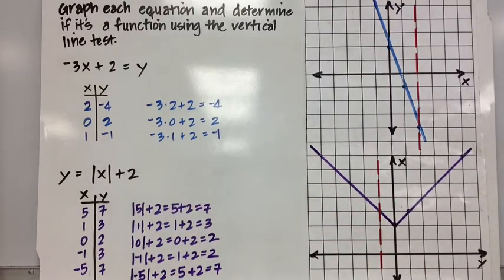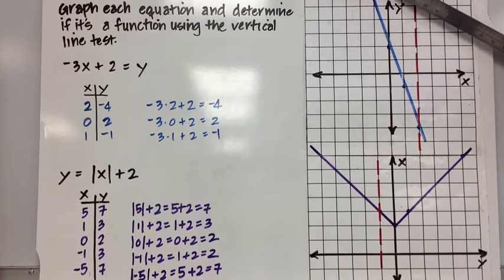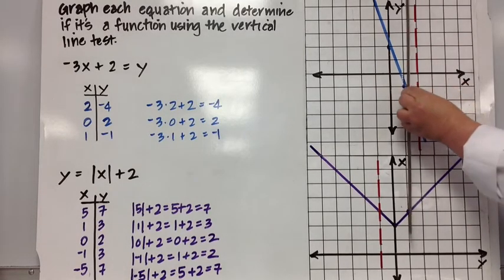So I graph those points: 2 comma negative 4, 1 comma negative 1, and 0 comma 2. Those points are all connected by a straight line. That represents the equation y equals negative 3x plus 2. You can see I drew one vertical line through the graph. It only passes through it once.